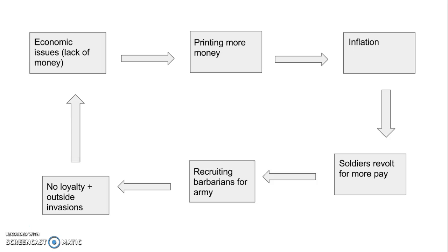This cycle is very similar to the way other civilizations also fell. For example, Persia fell for a similar reason as the Romans. This trend continues with the Han Dynasty. Basically, due to a poor economic cycle that eventually led to their downfall, these empires fragmented.